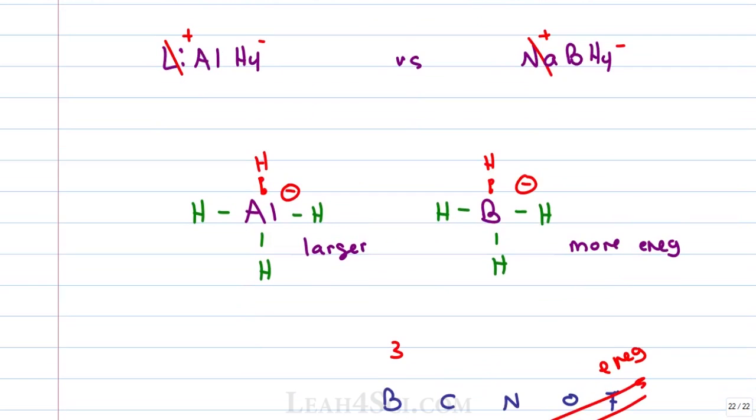Not only that, but aluminum has one more shell compared to boron and that means it has more electrons surrounding that nucleus before we can finally get to hydrogen. If aluminum is larger, the hydrogen has a longer bond, and if it's less electronegative it's not being held as strongly.